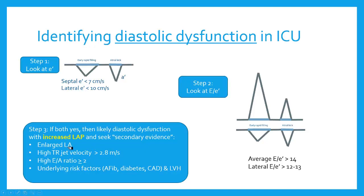All I'll do at this point is seek a little bit of secondary evidence. If I'm wondering if it's chronic, I'll look for an enlarged left atrium — I can even do that qualitatively. I can look for secondary pulmonary hypertension by looking at my TR jet velocity. If I have a very high E to A ratio, E to A greater than or equal to 2, that's another marker. And of course I'm going to think about underlying risk factors — chronic risk factors for HFpEF like AFib, diabetes, coronary disease, and LVH — but also acute things like septic cardiomyopathy, which is often a diastolic failure at first. So all of it's put in context, but these are really only two things to look at in the ICU.